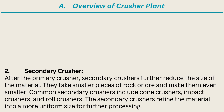2. Secondary Crusher. After the primary crusher, secondary crushers further reduce the size of the material. They take smaller pieces of rock or ore and make them even smaller. Common secondary crushers include cone crushers, impact crushers, and roll crushers. The secondary crushers refine the material into a more uniform size for further processing.